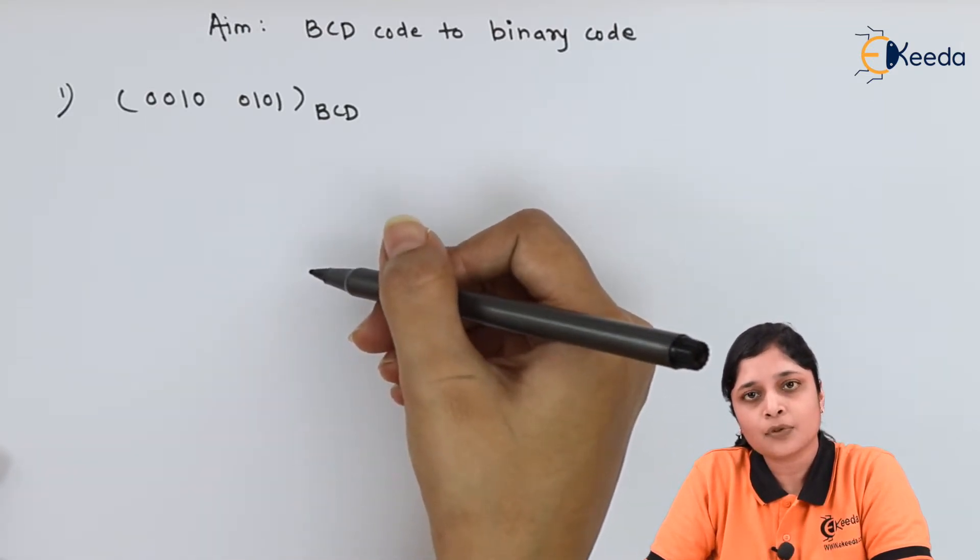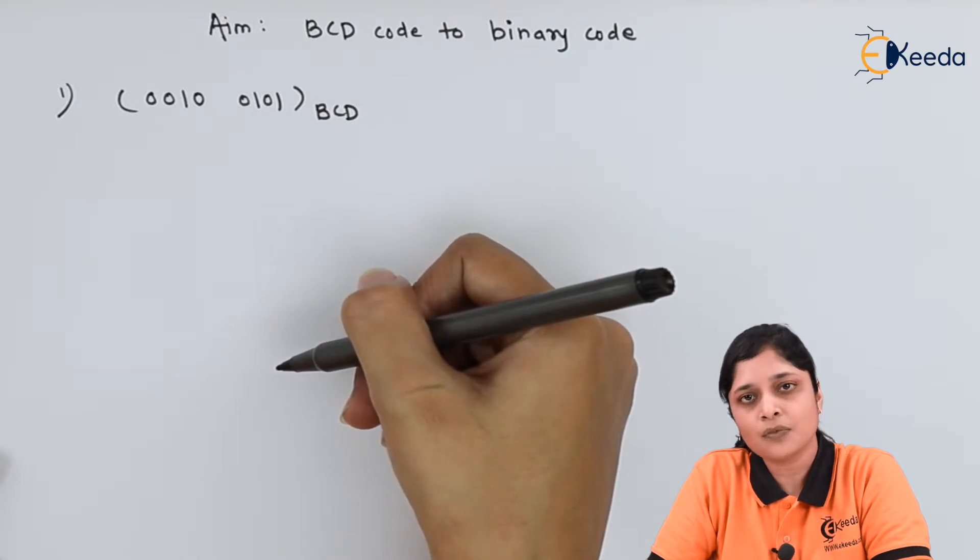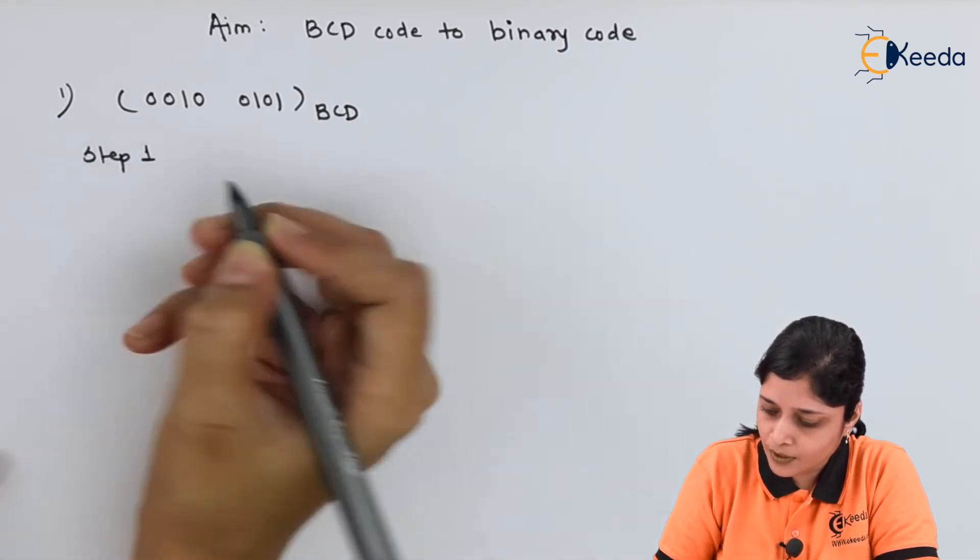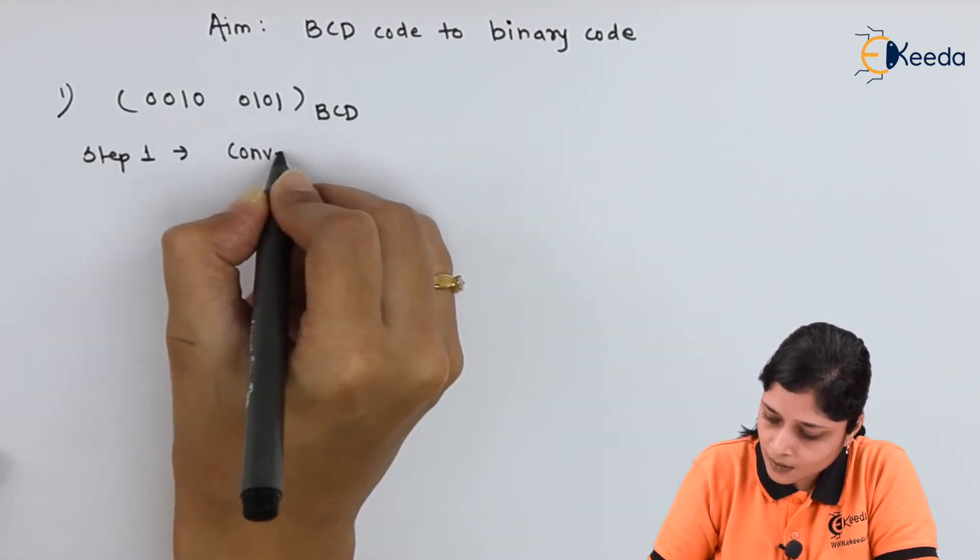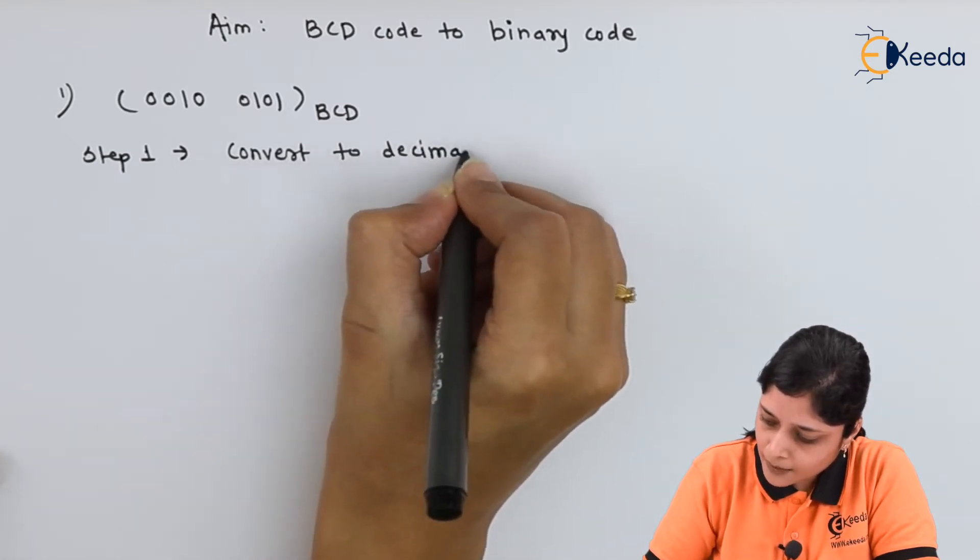For applying the procedure of decimal to binary, you need to apply successive division method approach. So, we'll start with the first step. Step 1: Convert to decimal number.